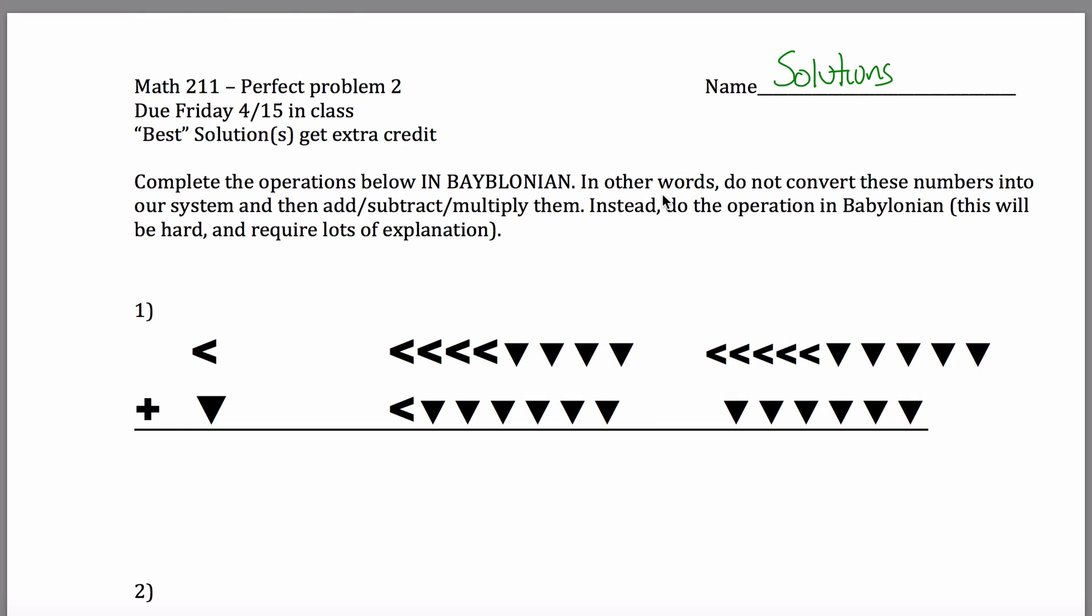So we're adding in Babylonian here, and in Babylonian what you need to know is that this little symbol means 0, and this symbol means 10. I'm writing these in a weird order. This symbol means 1, and this symbol means 10.